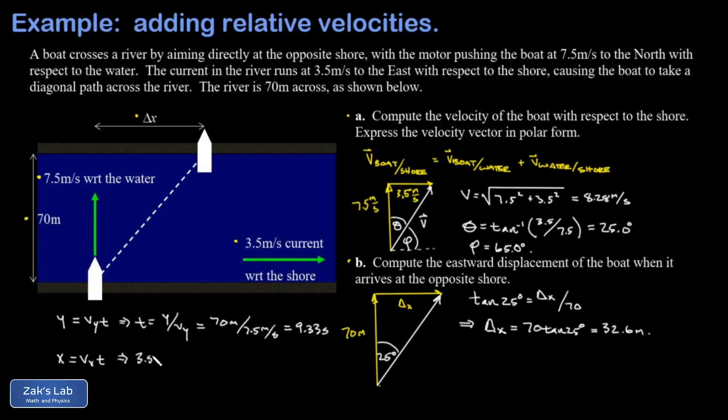That current was moving to the east at 3.5 meters per second and it did that for 9.33 seconds as the boat crosses the river. When I run the numbers on this I get 32.7 meters. So there's a slight discrepancy between the two answers - one was 32.6 and one was 32.7. That can be attributed to rounding error, and we finish with a high degree of confidence that we've got the right answer.